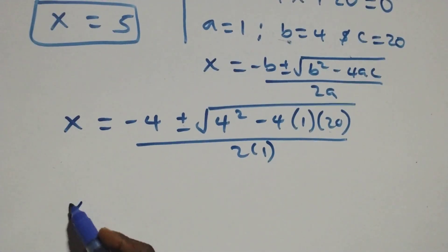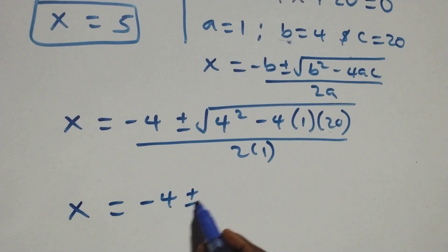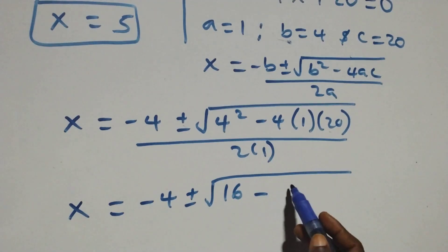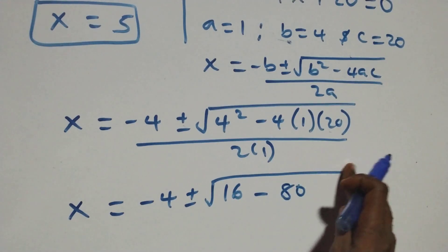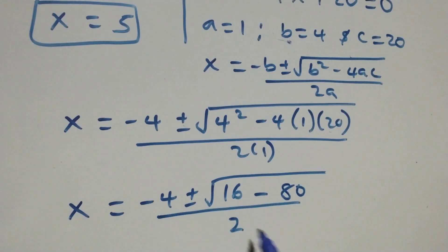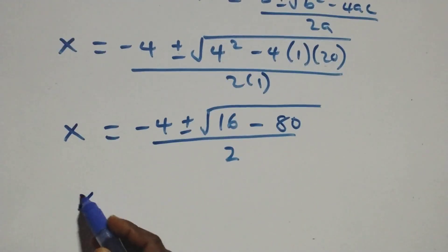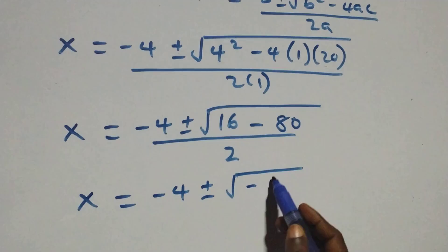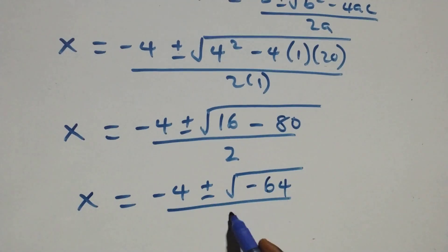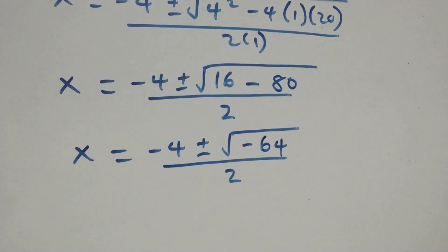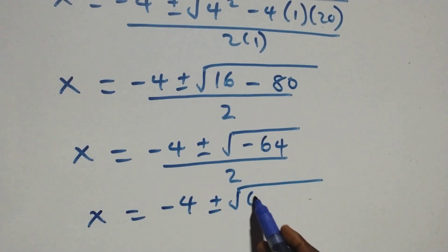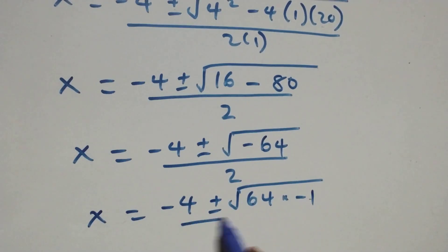We have x equals (minus 4 plus or minus square root of 16 minus 80) over 2. That gives x equals (minus 4 plus or minus square root of negative 64) over 2. We can write this as (minus 4 plus or minus square root of 64 times minus 1) over 2.